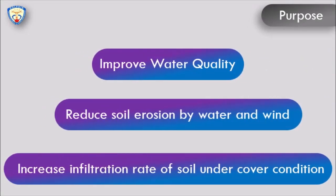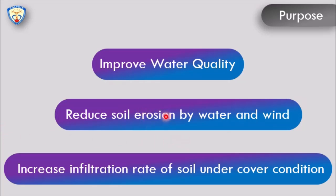The purpose of strip cropping: First, strip cropping is helpful to improve water quality. If soil erosion is controlled, the deposition of sand and silt in water bodies will be controlled and water quality is improved. Second, different types of strip cropping are helpful to reduce soil erosion by both wind and water.